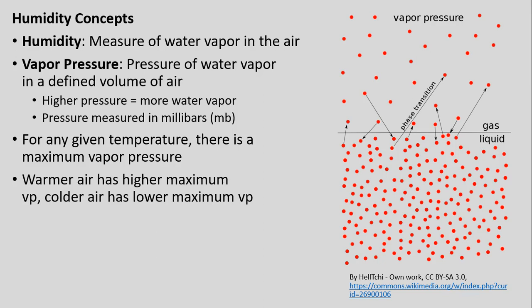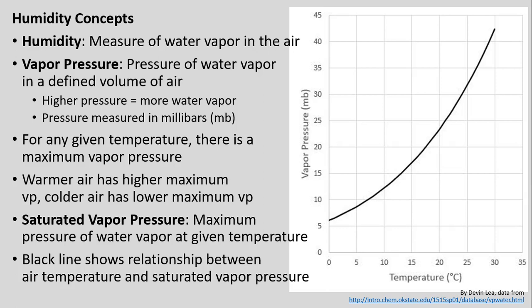Generally, the warmer the air, the higher its maximum vapor pressure; the colder the air, the lower its maximum vapor pressure. There are two separate terms to keep straight: the actual vapor pressure — the amount of water vapor in the air — and the saturated vapor pressure, which is the maximum vapor pressure. Maximum vapor pressure and saturated vapor pressure are the same thing.